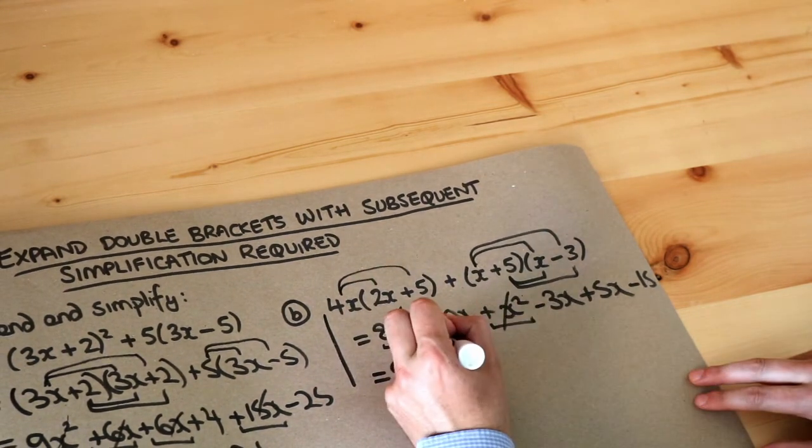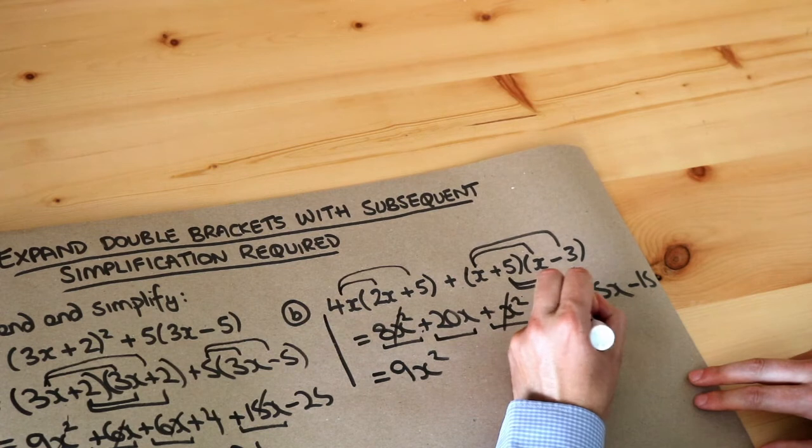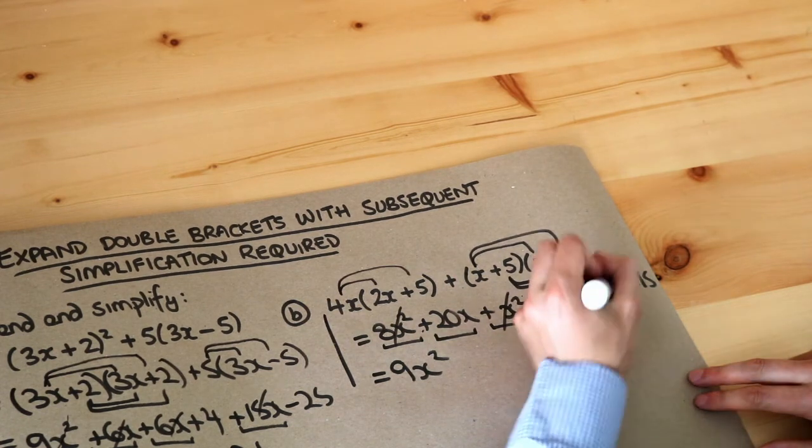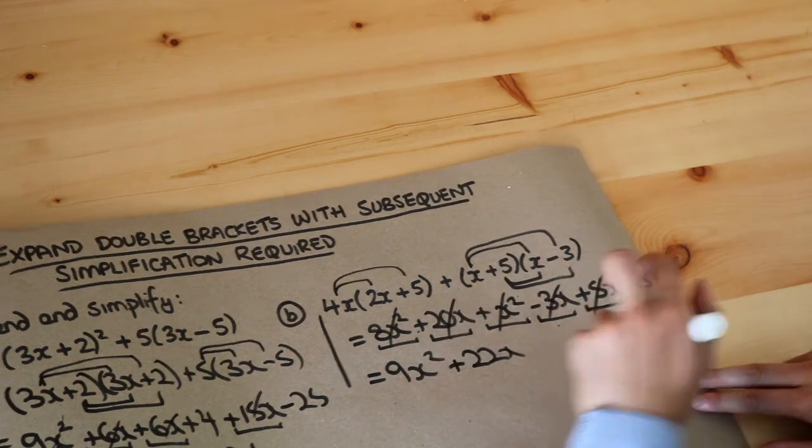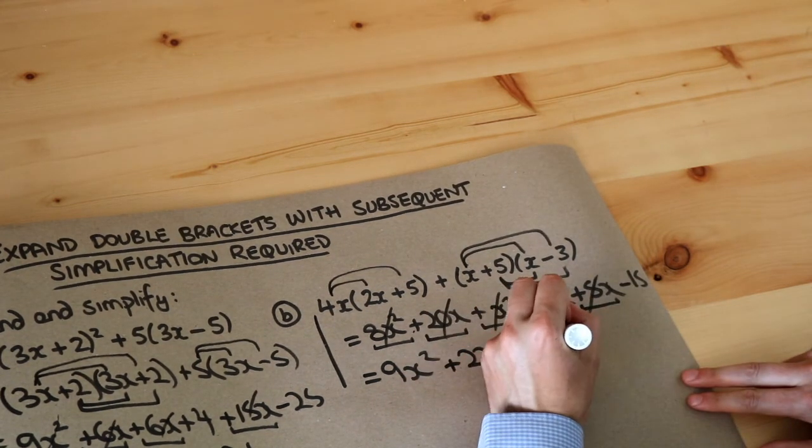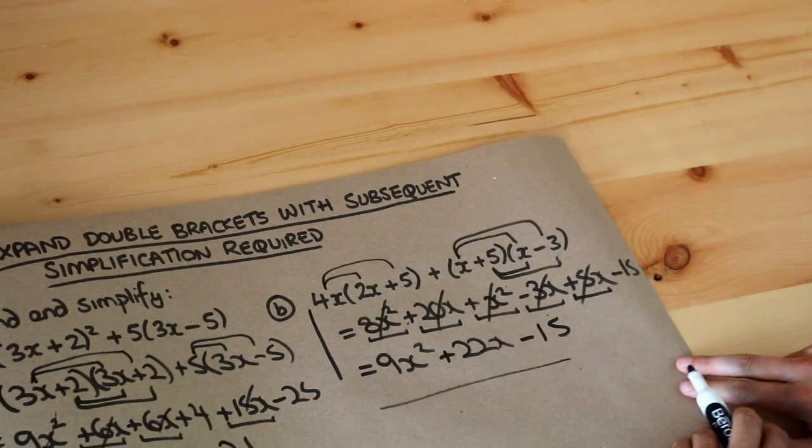Then let's look at the x terms. 20 lots of x minus 3 lots of x is 17 lots of x plus 5 lots of x is 22 lots of x. And finally we've got that minus 15 minding its own business at the end. And that is the final answer.